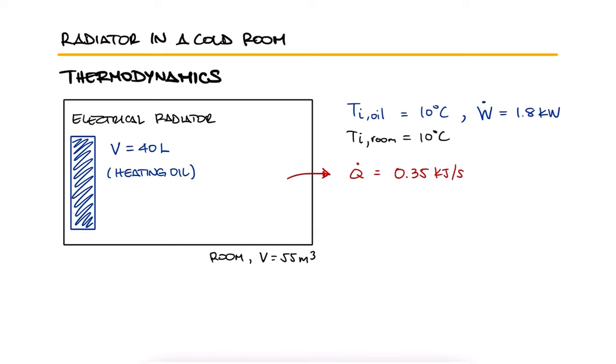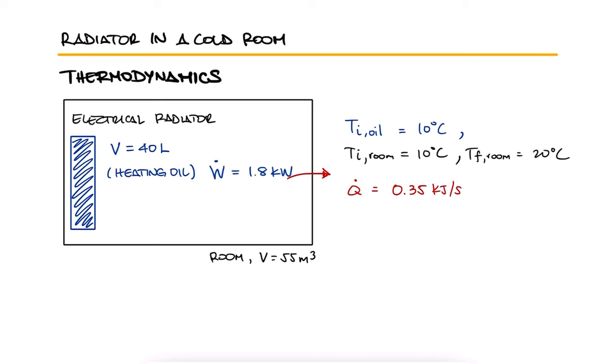After some time, the average temperature is measured to be 20 degrees Celsius for the air in the room and 50 degrees Celsius for the oil in the radiator. Taking the density and specific heat of the oil to be 950 kg per cubic meter and 2.2 kJ per kilogram degree Celsius, how long was the radiator on for? Assume an atmospheric pressure of 100 kilopascals.